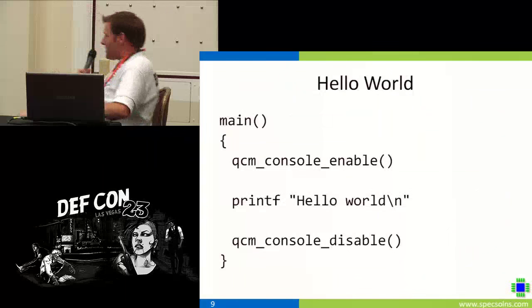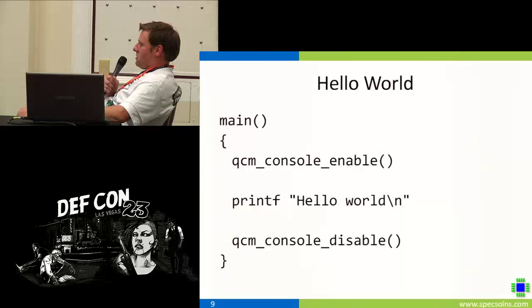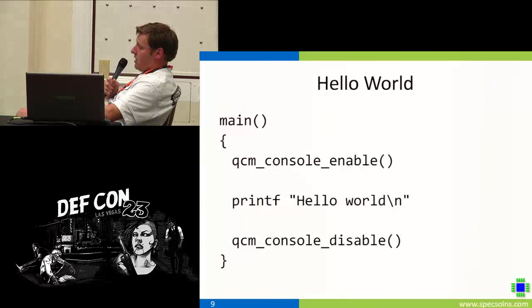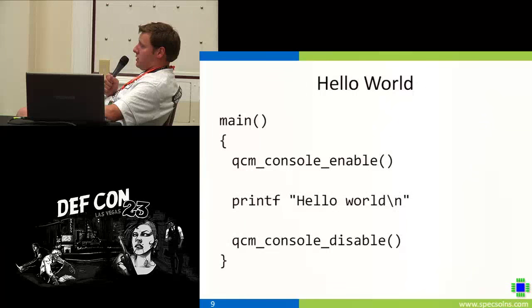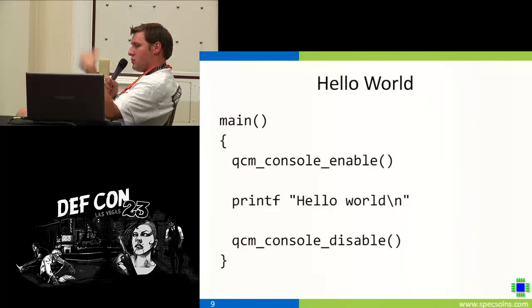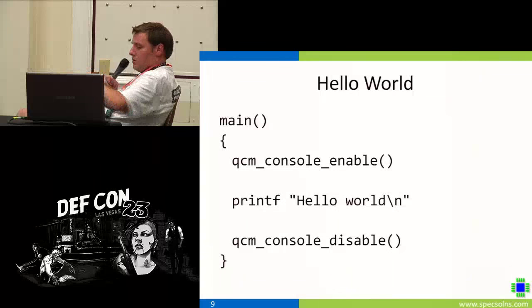The classic place everyone starts: Hello World. This is a fully compilable Hello World script. You can see it looks like C — there's a main, they use brackets to denote blocks, and there's a built-in function called printf just like C, no semicolons. Basically what this does is it calls a native extension called QCM console enable. That allows the script to output through the UART port — because by default the UART port is set to reprogram scripts, so you've got to tell the engine you want to take control of it. Then just to clean up at the end, we disable it, which is optional.